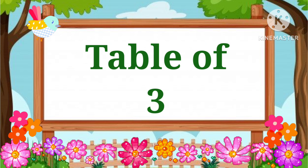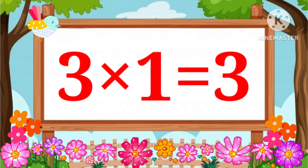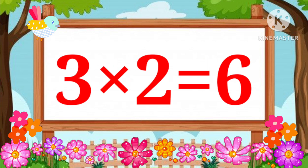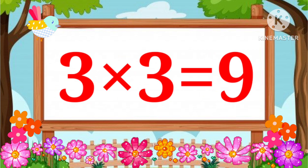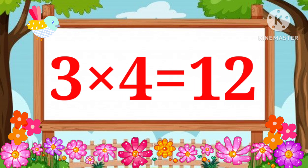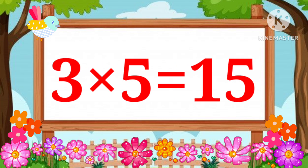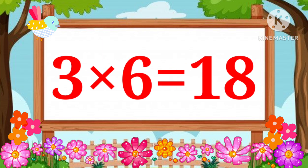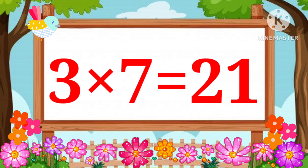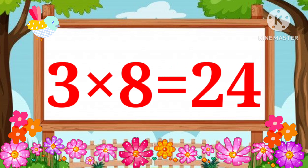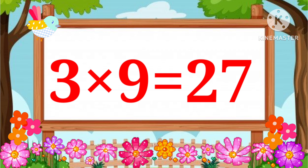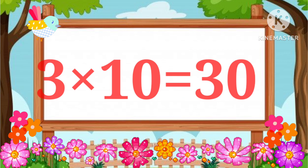Table of Three. Three one's a three, three two's a six, three three's a nine, three four's a twelve, three five's a fifteen, three six's a eighteen, three seven's a twenty-one, three eight's a twenty-four, three nine's a twenty-seven, three ten's a thirty.